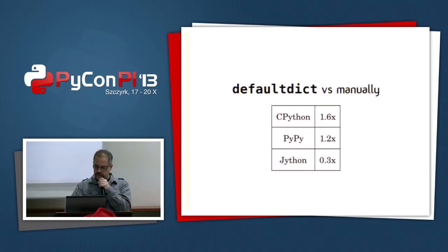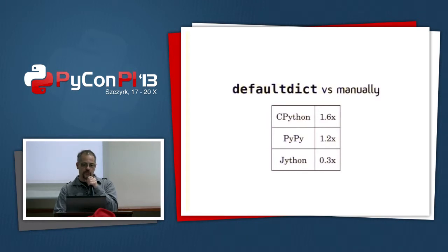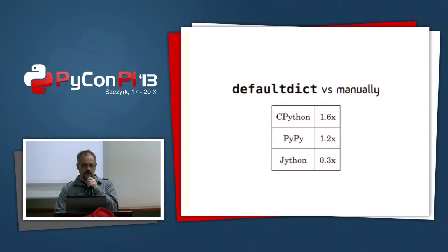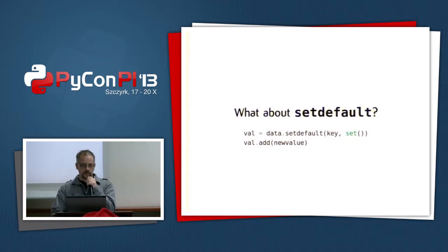You might think the clever core developers of Django know something we don't — maybe defaultdict is slower. I benchmarked that, and it isn't; it's a little bit faster. It's just because there haven't been any bugs in that code, so nobody changed it. Using defaultdict means you have less code, less bugs, and it's also faster.